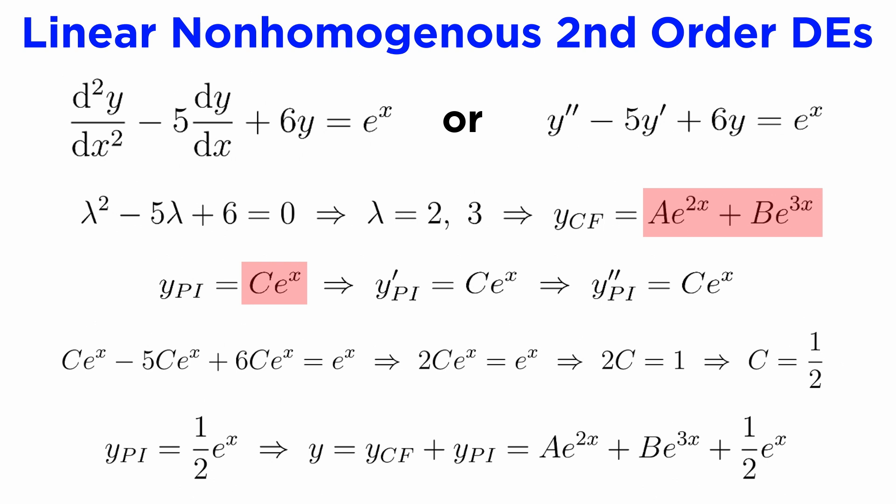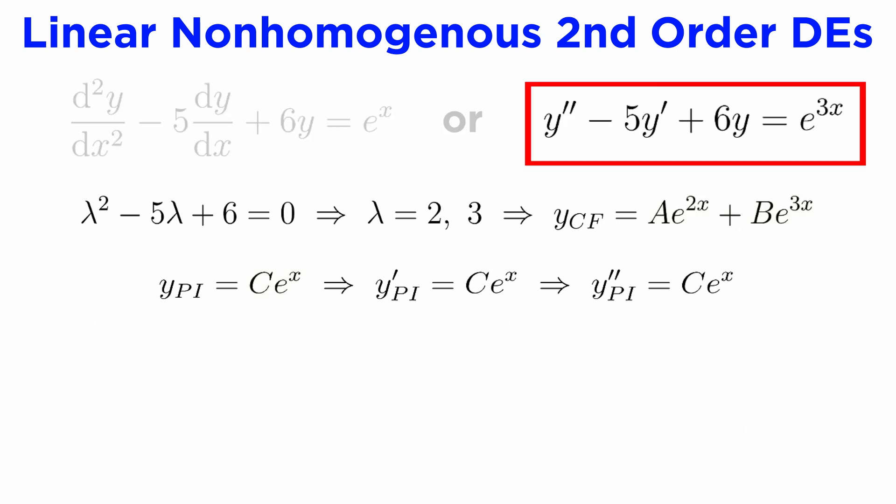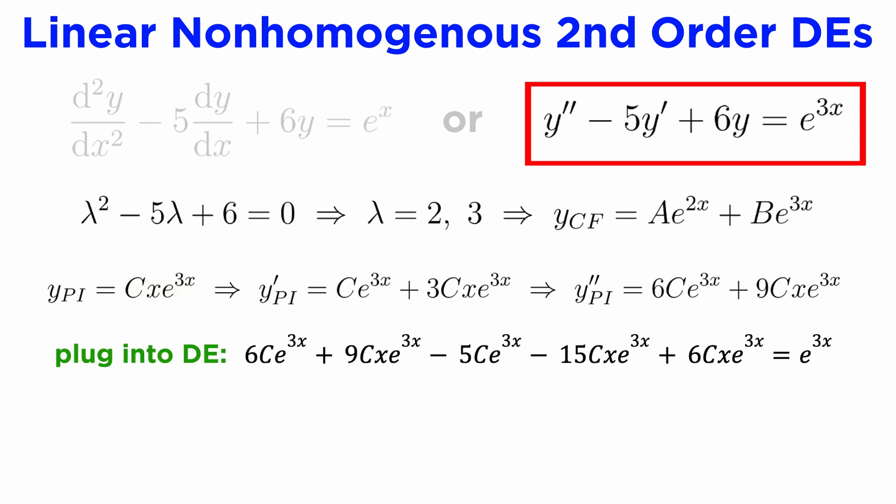One thing to be aware of is that if we find that our trial function was not linearly independent of our complementary solution, all we need to do is multiply the dependent term by x. So if the right side of our DE was e^(3x) instead of e^x, we would first try the trial function Ce^(3x). But then, because there's already an e^(3x) term in our complementary solution, we would multiply our trial function by x, and use Cxe^(3x) instead. From there, the method is the same, where we will notice that the xe^(3x) terms all cancel out, allowing us to equate the e^(3x) terms as before.